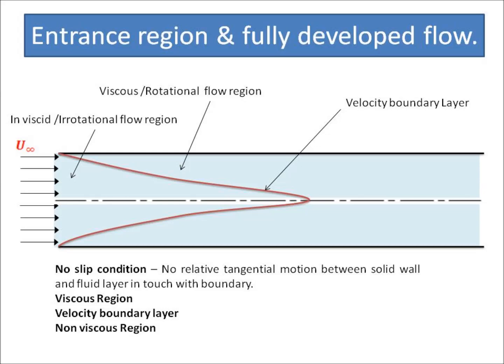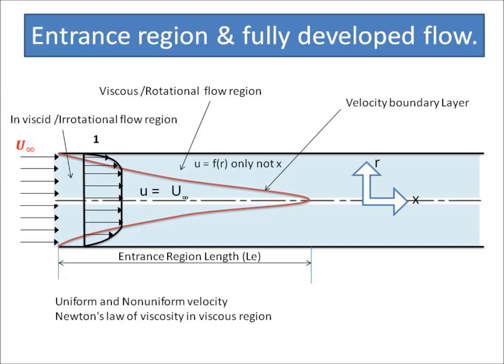You can see here the velocity boundary layer region, the viscous region, and the non-viscous region. In the viscous region, velocity is a function of radius, hence there exists a velocity gradient du/dr. In the non-viscous region, u is constant and always equal to u-infinity, hence the velocity gradient du/dr is zero. Therefore it is possible to apply Newton's law of viscosity in the viscous region, while Bernoulli's theorem can be applied in the non-viscous region.